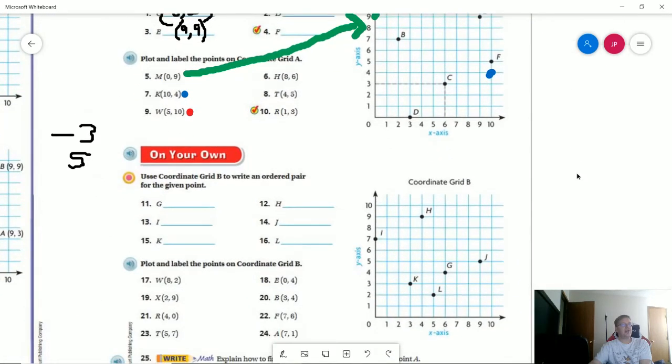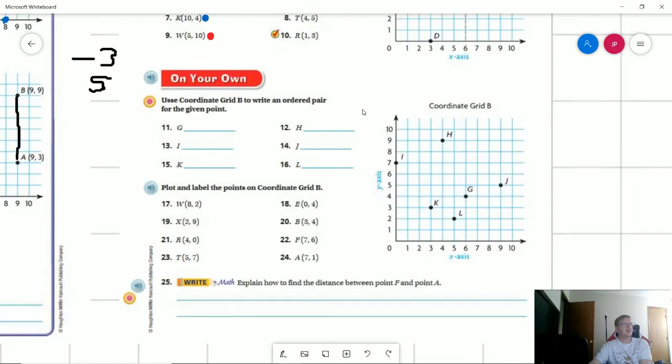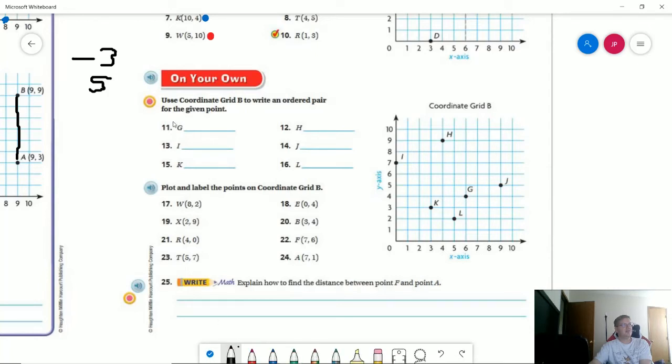Let's take a look at on your own. So again, we're going to be doing 11, 13, 15, all the way through 25. So go ahead and pause the video if you need to. I'm going to go ahead and start writing down the ordered pairs. So G is going to be at six, four. I is going to be at zero, seven. And K is going to be at three, three.